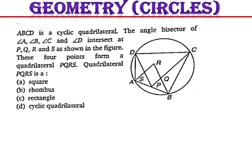ABCD is a cyclic quadrilateral. The angle bisectors of angles A, B, C, and D intersect at points P, Q, R, S as shown, forming quadrilateral PQRS. Always remember: whenever you have a cyclic quadrilateral and take the angle bisectors of its angles, the quadrilateral PQRS formed will also be a cyclic quadrilateral. Remember this as a property and write it directly.